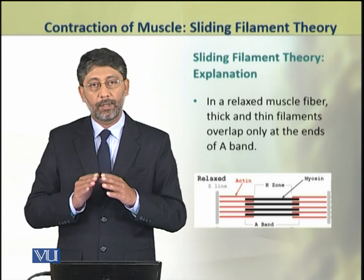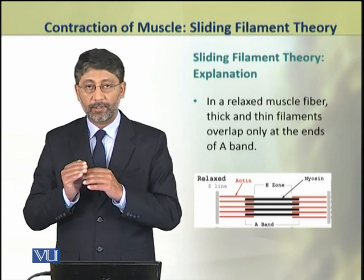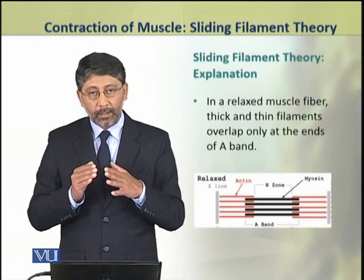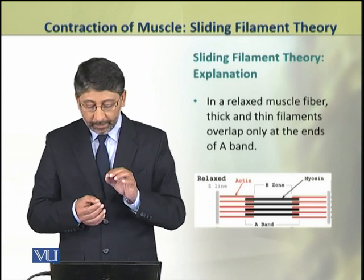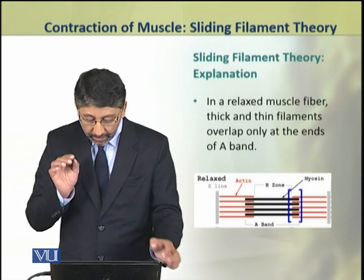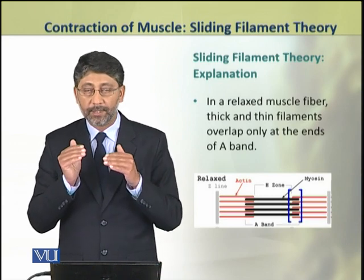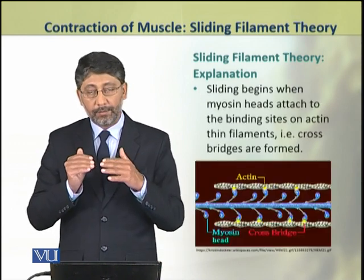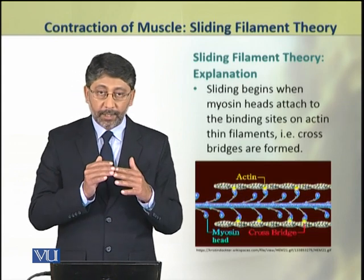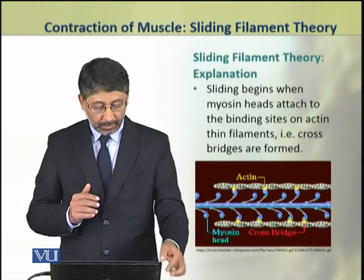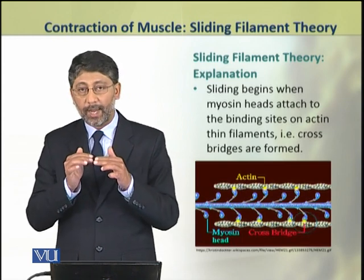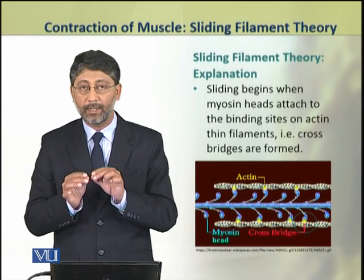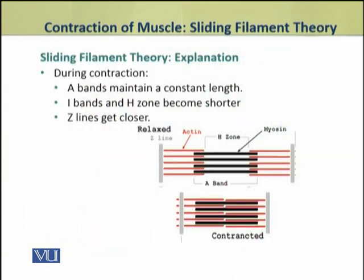Now we shall explain the sliding filament theory. In the relaxed muscle fiber, the thin and thick filaments overlap only at a small region of the A band. When sliding begins, there is formation of cross bridges between the thick and thin filaments due to the myosin heads binding with the actin protein at specific sites.